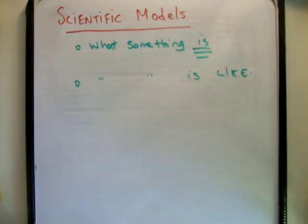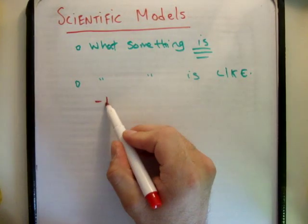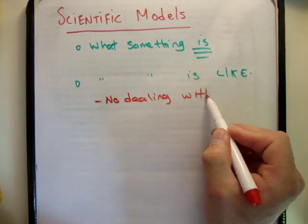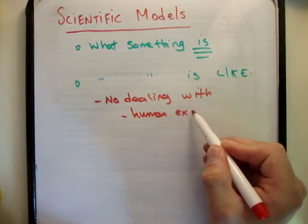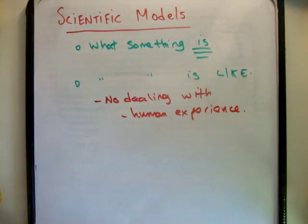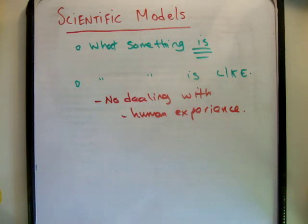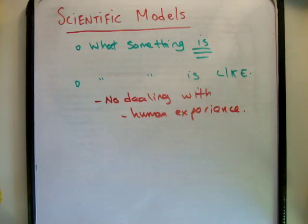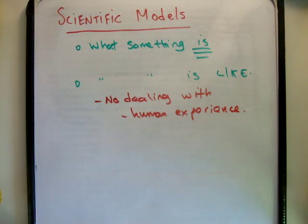All we can do is say what something is like. One of the reasons for that is that we are not dealing with human experience. Human experience revolves around the fact that we are on earth, and our experience is how things behave on earth. If you go on a larger scale to the cosmos, things don't behave like they do on earth. If you go to a smaller scale, down to the size of an atom, things don't behave like they do on earth either. All we can try to do is relate what we see in our world and say the thing we're observing in the atom behaves like something else that we understand.